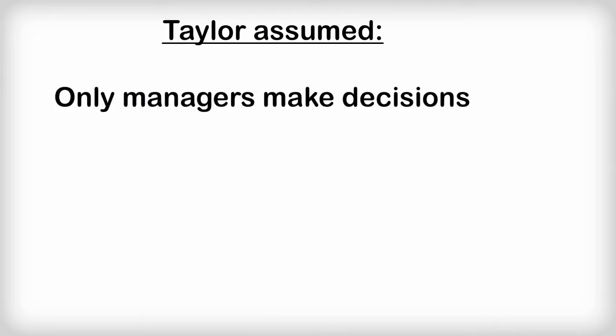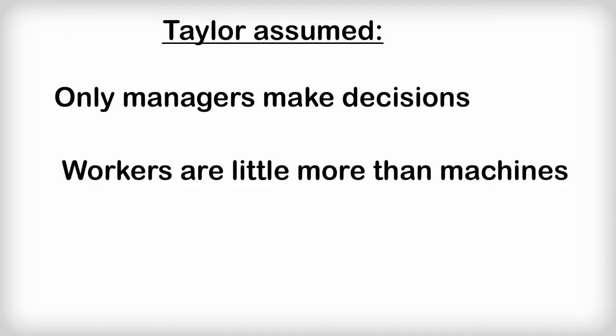Taylor made three assumptions about management. Firstly, that decision-making was purely a management role. Workers are just required to provide their physical labour. Secondly, workers were only viewed as machines with certain powers and capabilities. It was up to managers to identify ways of finding the best use of labour.